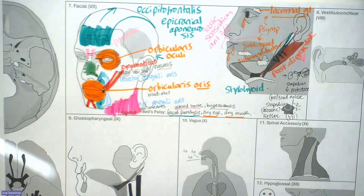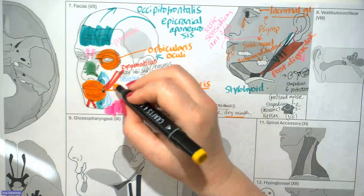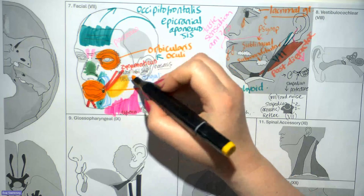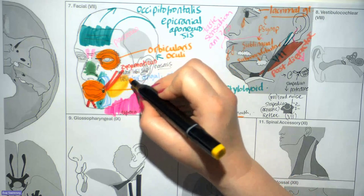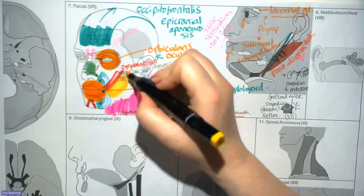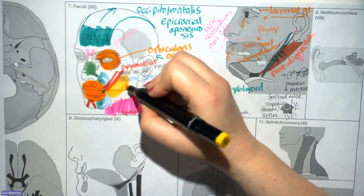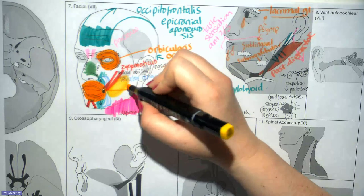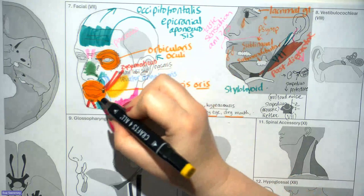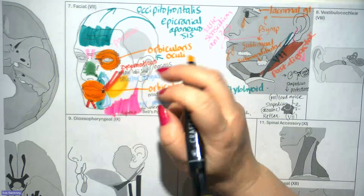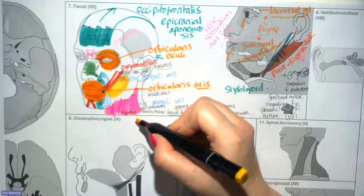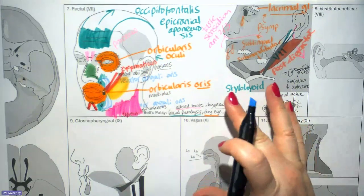The last muscle is the buccinator in the cheek region. The buccinator attaches to the pterygoid process superiorly, the mandible inferiorly, and extends between those structures at the pterygomandibular raphe, where it blends with the constrictor muscles of the pharynx. When food comes in, the buccinator pushes it against the teeth and back towards the pharynx — a continuous tube for food to pass through.